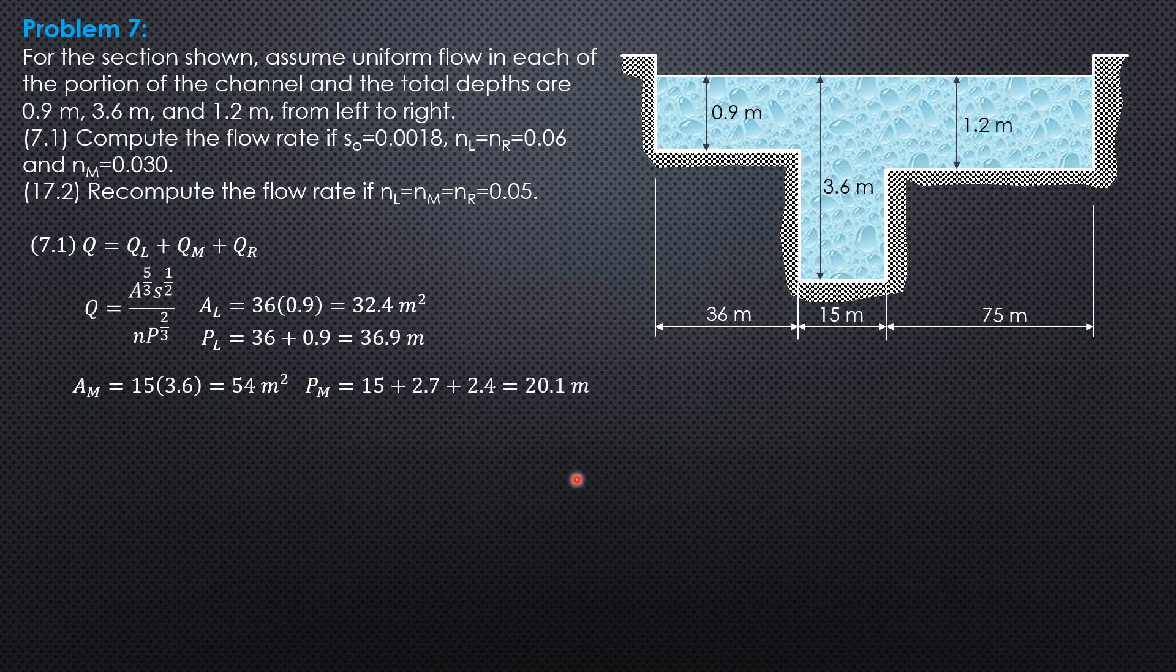So the wetted perimeter for the middle channel is 15 plus 2.7 plus 2.4, so 20.1 meters. Then for the right channel, the area is 75 times 1.2, 90 square meters, and the wetted perimeter is 75 plus 1.2 only, so 76.2.